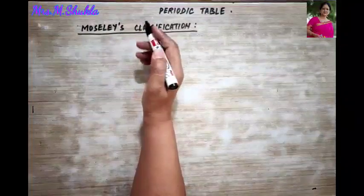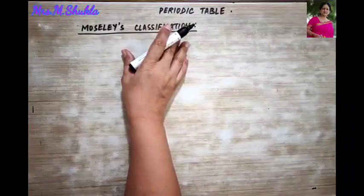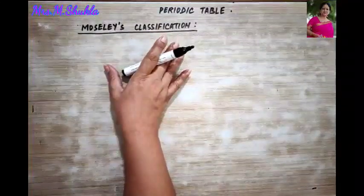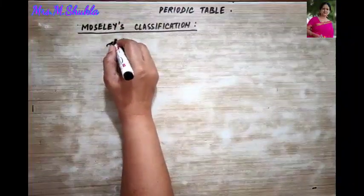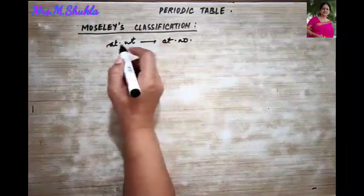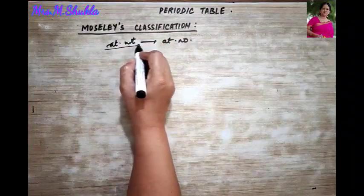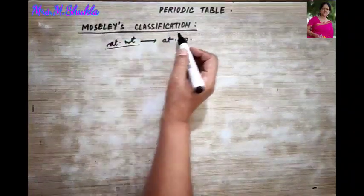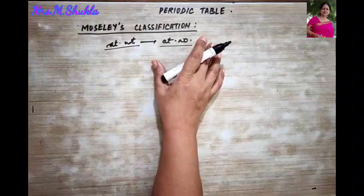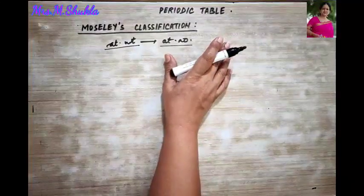The next scientist who came forward with his classification was Moseley, and it is called Moseley's classification. Most of the defects in Mendeleev's periodic table disappeared when the basis of classification of elements changed from atomic weight to atomic numbers. Earlier, up to Mendeleev, elements had been classified according to increasing atomic weight, but Moseley classified the elements according to increasing atomic number.